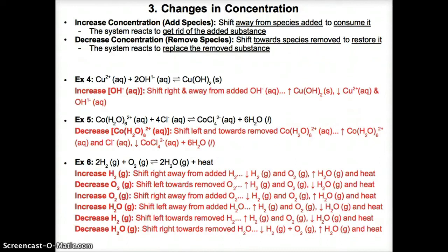In Example 5, Co(H2O)6²⁺(aq) plus 4 Cl⁻(aq) on the left is in equilibrium with CoCl4²⁻(aq) plus 6 H2O(l) on the right. Decreasing the concentration of Co(H2O)6²⁺ means there's too little, so equilibrium shifts left towards it to produce it like a product. This lowers CoCl4²⁻ and H2O concentrations while raising Co(H2O)6²⁺ and Cl⁻ concentrations.